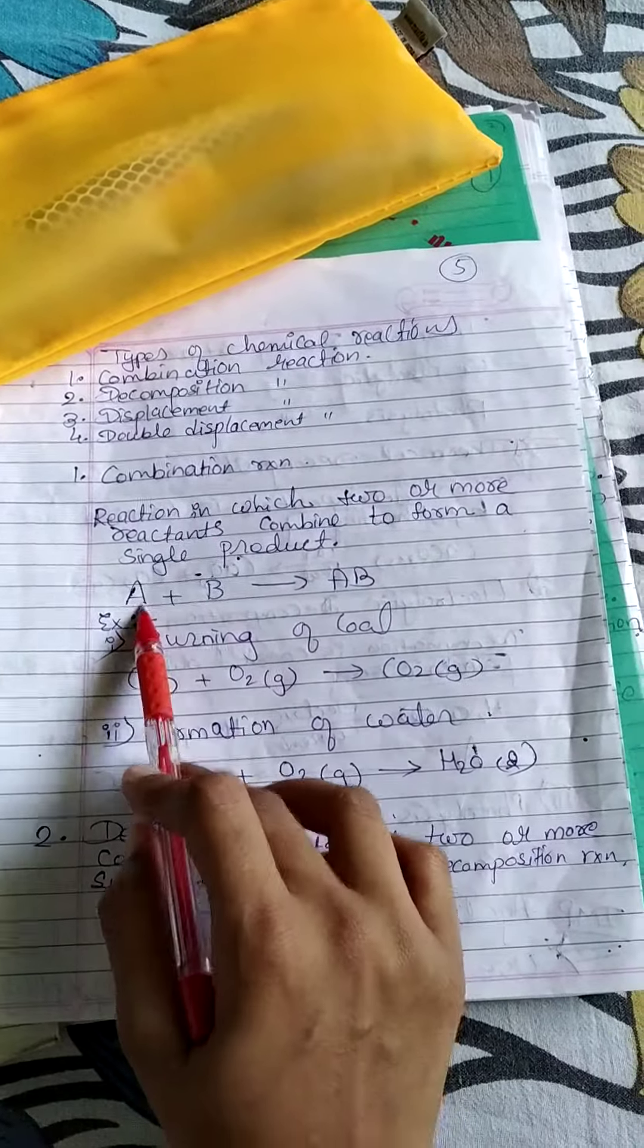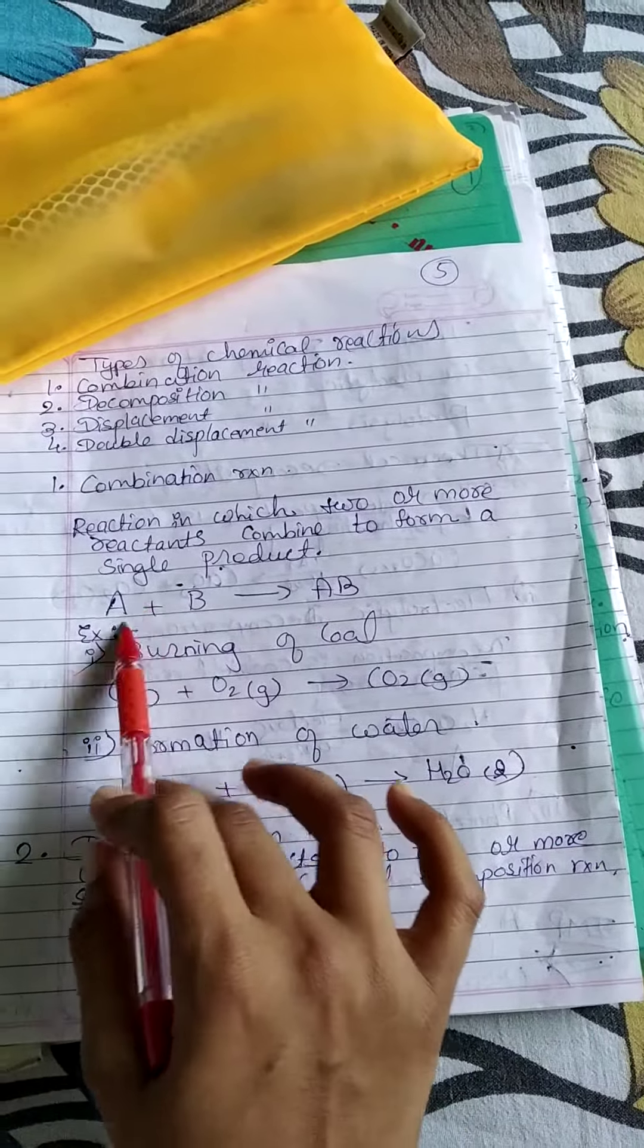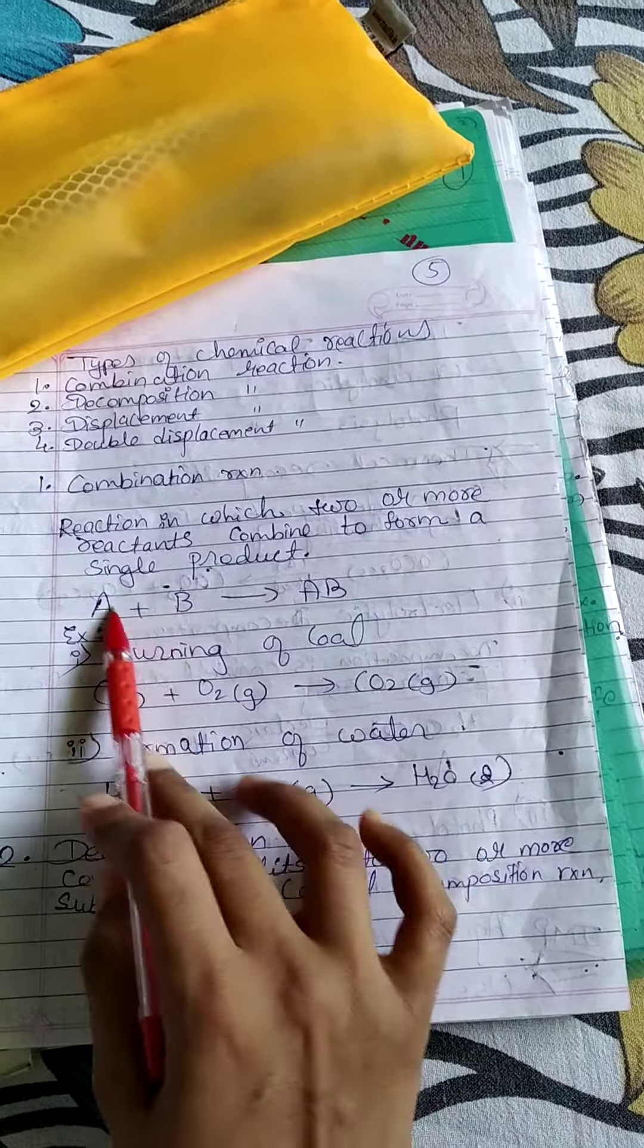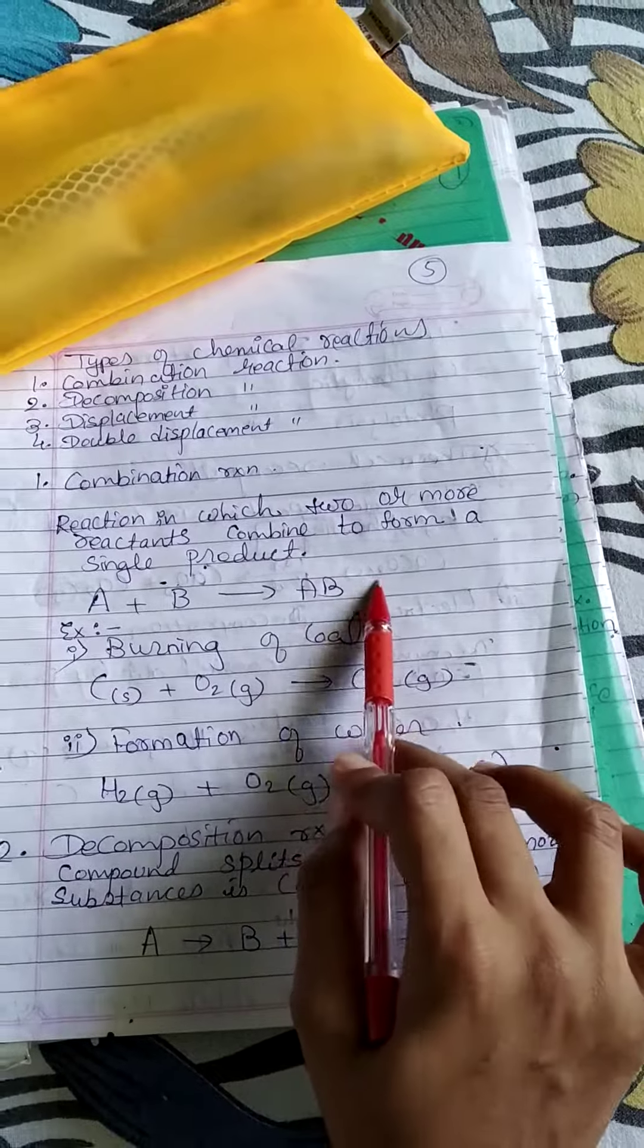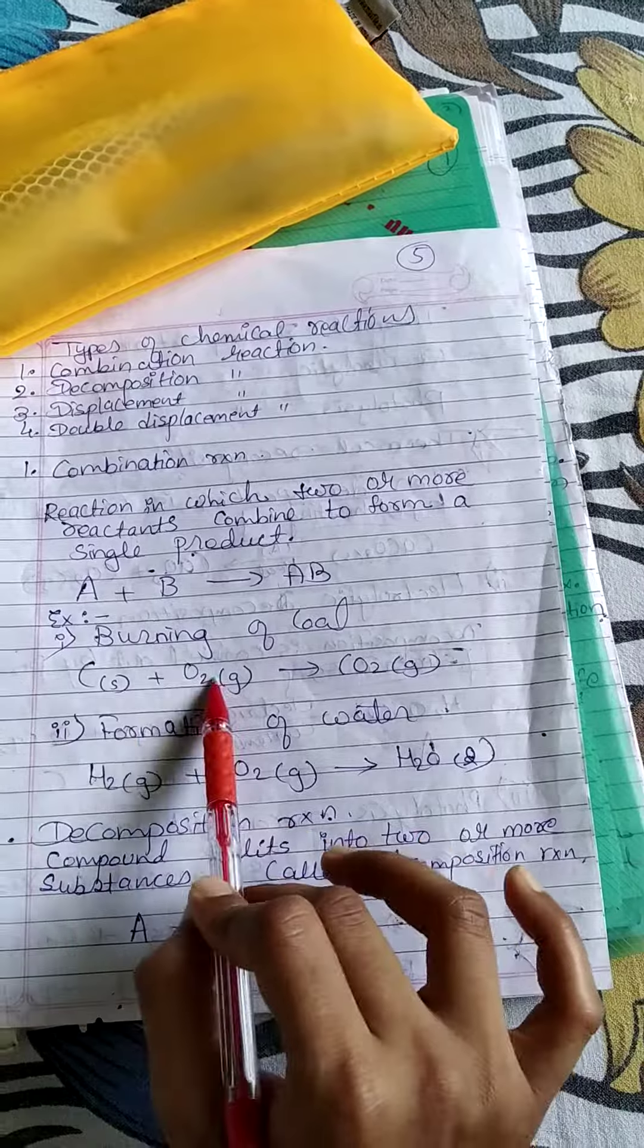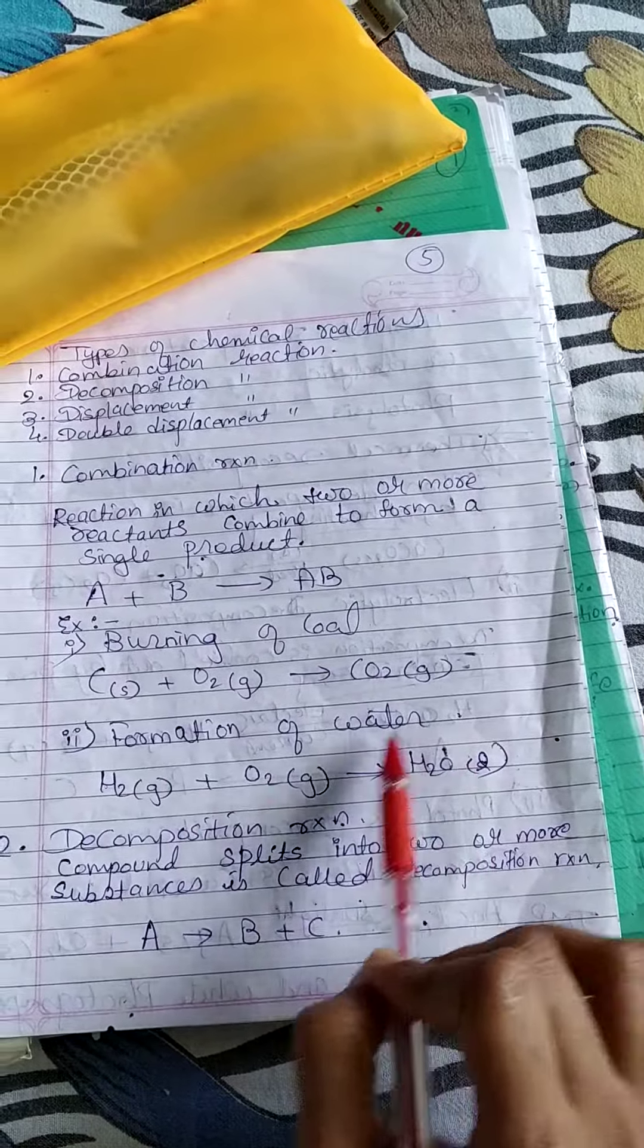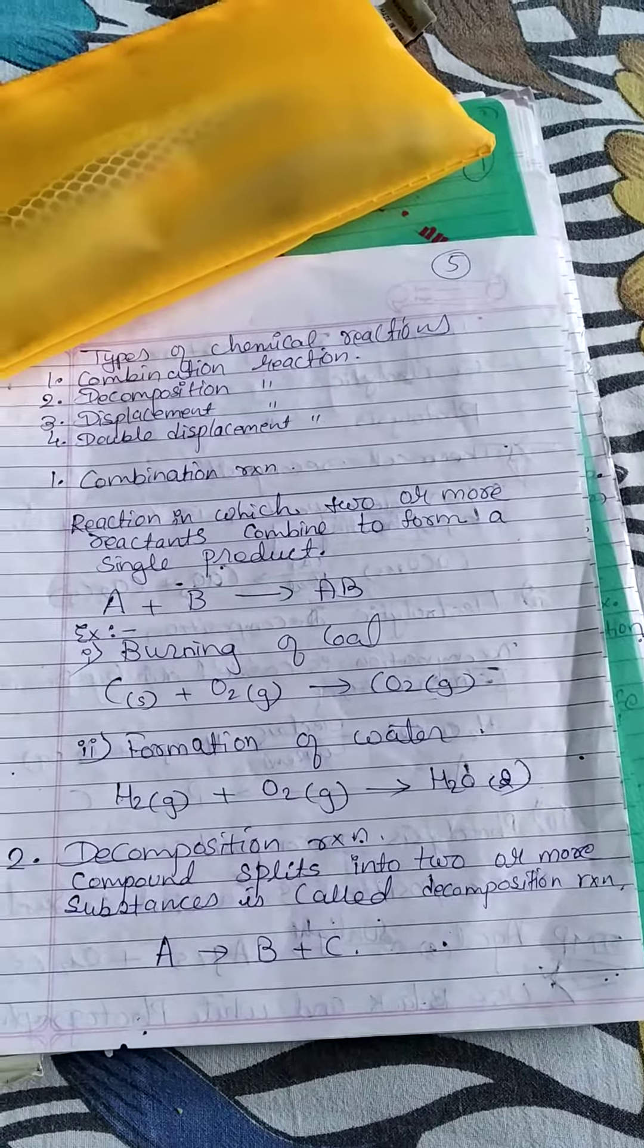Combination reaction means 2 reactants give 1 product. Two or more reactants combine to form a single product. Then we say combination reaction. Like C + O2 gives CO2, or H2 + O gives H2O, or H2 + O2 gives H2O2.